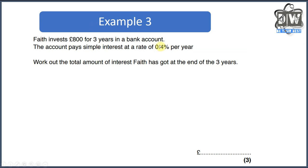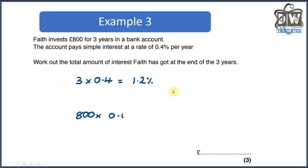First thing we do is take our percentage and times it by the years: three times 0.4 gives us 1.2 percent. This is why it was a little difficult — some of you might have then just applied 1.2 directly to the 800. But remember, 1.2 percent as a decimal is not 1.2 — it's actually 0.012. So we do £800 times 0.012, and we end up with £9.60. Some of you would have incorrectly worked it out as £40 over the three years.